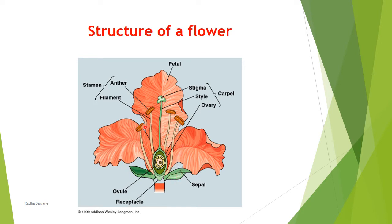Inner to calyx, the second whorl of a flower is called corolla, and the member of corolla is called petal. Petals make the flower beautiful — they are variously and brightly colored. Their main role is to attract biotic agents for pollination, particularly insects. Corolla is also an accessory whorl; its function is to attract insects for pollination and also to protect the inner essential whorls. Calyx and corolla are not directly involved in sexual reproduction, so they are called accessory whorls.